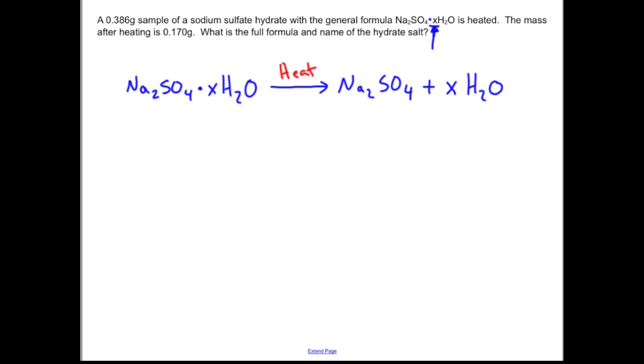We're going to assume we drive off all the water so now you're left with what we call the anhydrous salt. That is the no water salt and the mass of that is given in the problem. So now let's start filling in some of our numbers. We've got this many grams of the salt with no waters on it. The hydrate was the original guy and I do have the mass of it as well.